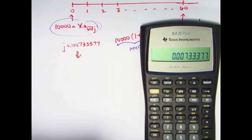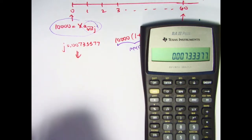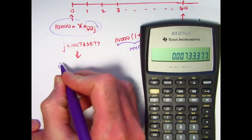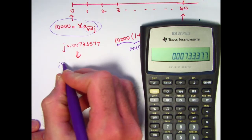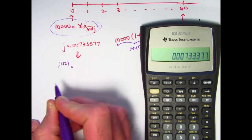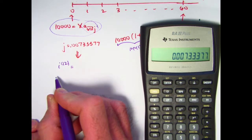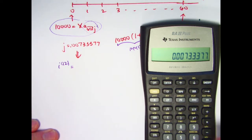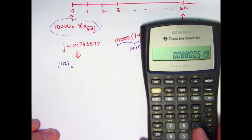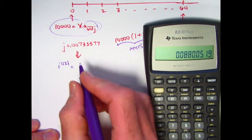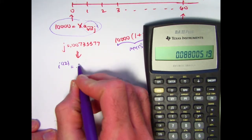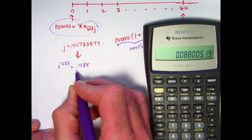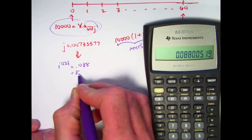Therefore, the final answer is 12 times j — labeled I(12), the nominal annual interest rate compounded 12 times per year. Multiplying 0.00733377 by 12 gives approximately 0.088, or about 8.8 percent.